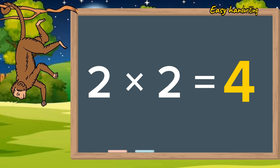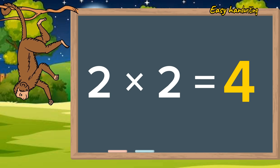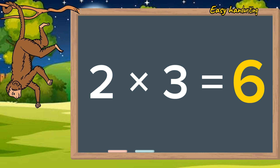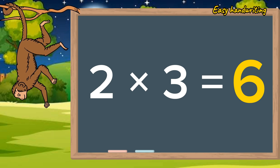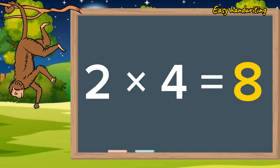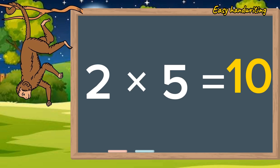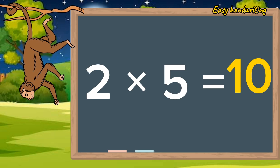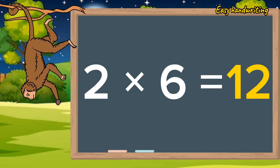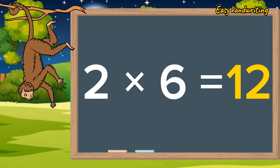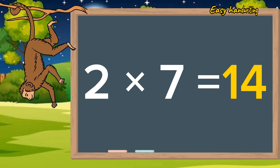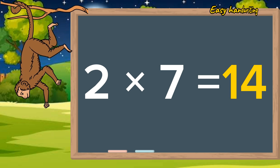Two twos are four. Two threes are six. Two fours are eight. Two fives are ten. Two sixes are twelve. Two sevens are fourteen.